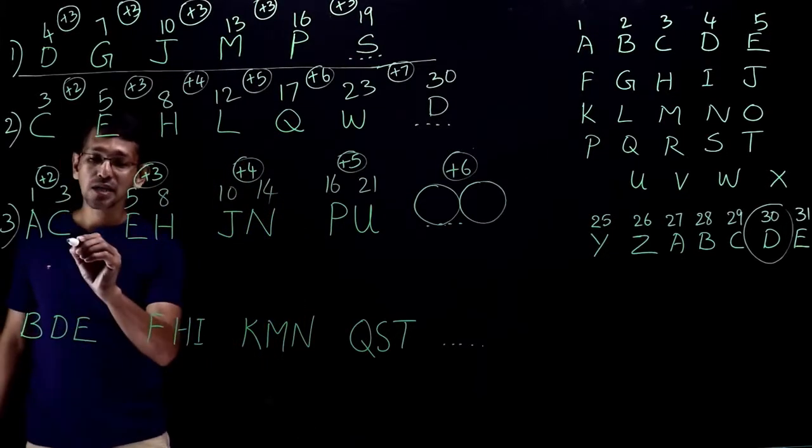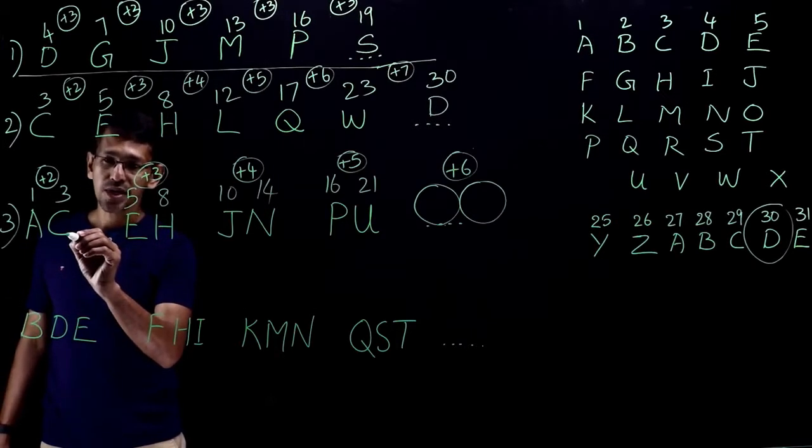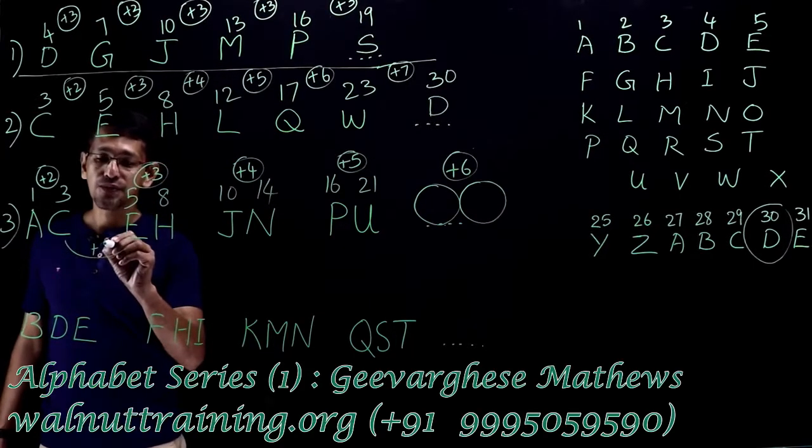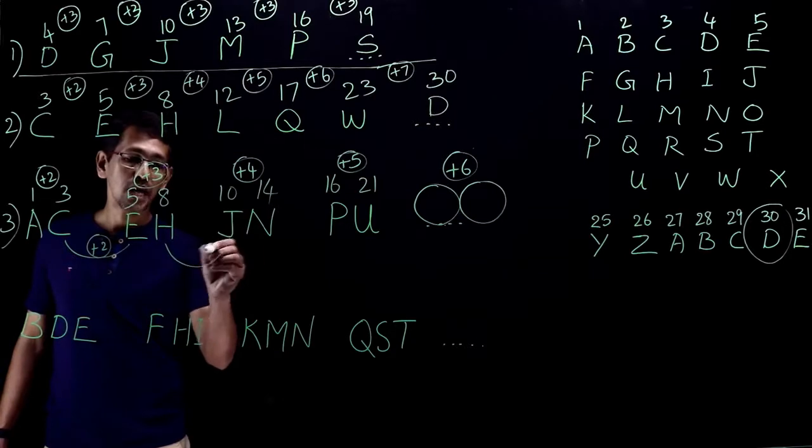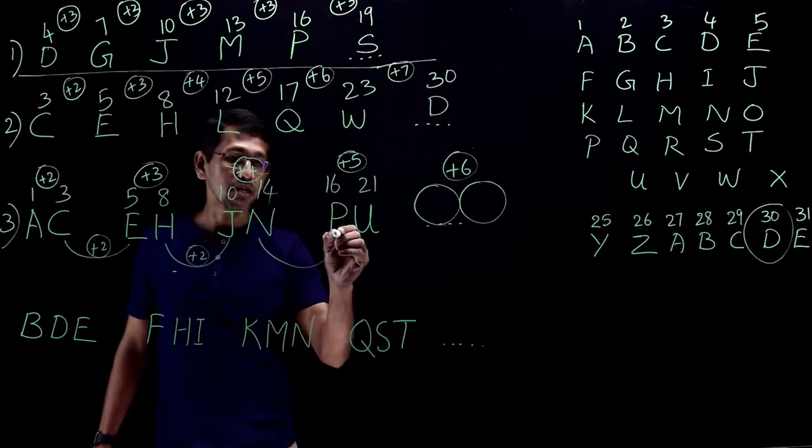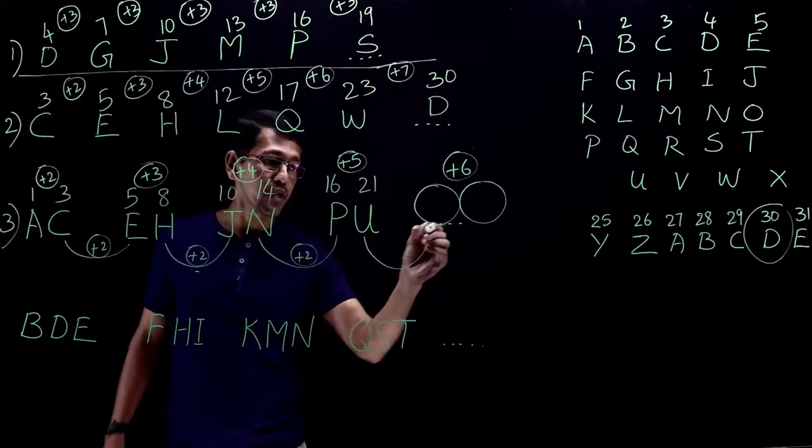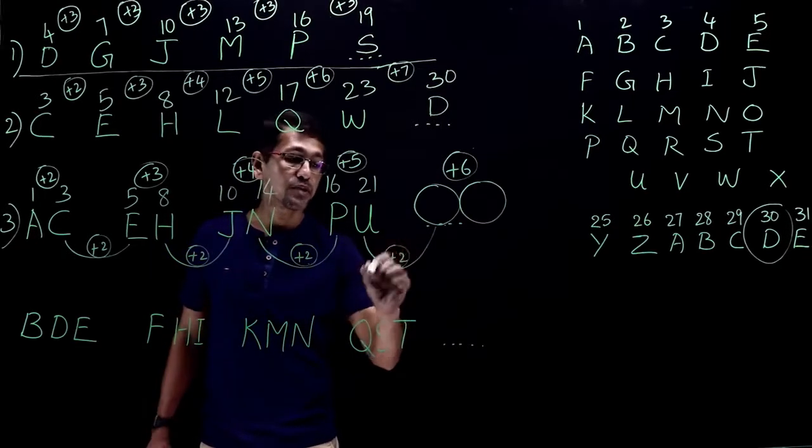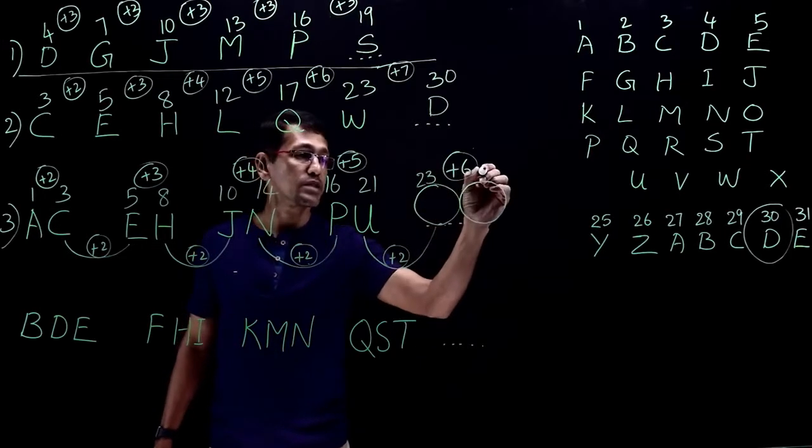So for that, we have to look at this pattern right here. The last letter of the first pair is 3, and the first letter of the second pair is 5. So 3 plus 2 equals 5. This is 8, and this is 10, so again plus 2. This is 14, this is 16, again plus 2. And U is 21. You see this? Plus 2, plus 2, plus 2. So U plus 2 is 21 plus 2 equals 23. 23 plus 6 equals 29.